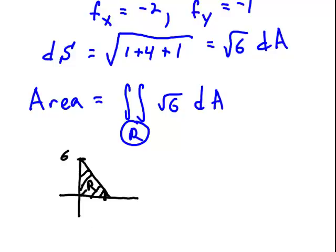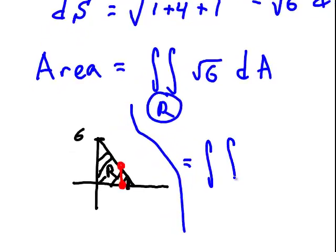Okay, so if we set up the usual order of differentials, dy dx, then this area integral becomes the integral, double integral, radical 6, okay, dy dx.